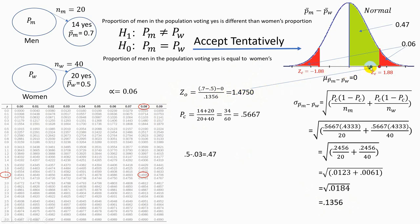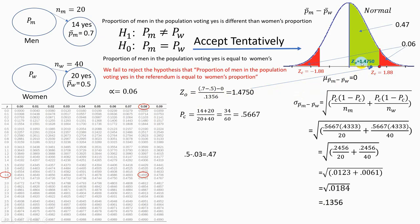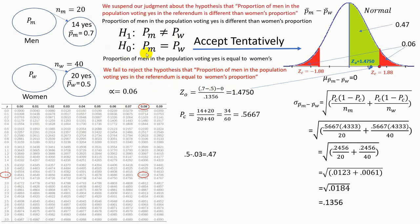Locating z = 1.475 on the z-axis, we see it is not in the rejection area. Because our observation is not significant enough, we fail to reject the hypothesis that the proportion of men in the population voting yes in the referendum is equal to women's proportion. Therefore we must suspend our judgment about the alternative hypothesis that the two proportions are different.